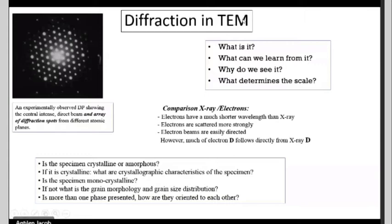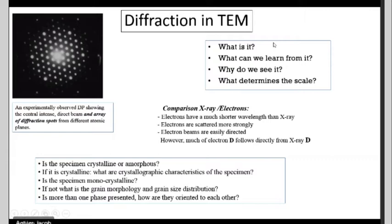For people who don't know about TEM, it basically has three components. At the top is an electron gun, where we extract electrons from a low work function material — for example, thoriated tungsten. The second part is the acceleration section, where we accelerate the electron using a high potential, typically in the range of 200 to 300 kilovolts. The third part is the viewing chamber with a fluorescent screen where we can visualize the diffraction pattern.